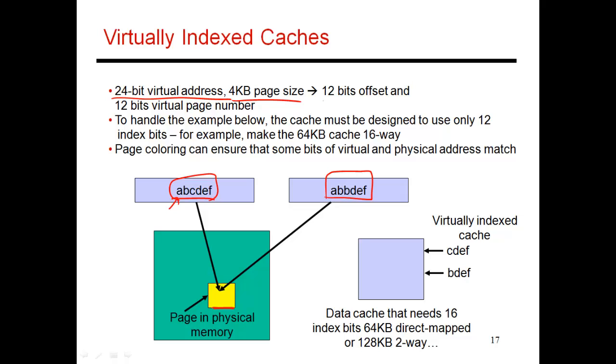So in this case, I have 12 bits of offset, because it's four kilobyte page size. So the last three bits are my page offset. And you'll see that they're exactly the same. They're DEF in both cases. And so it's only the virtual page number, which is ABC and ABB. And both will be translated into the same physical page number. If I have a small cache, then my index is contained within DEF. So both of these will map to the exact same set.